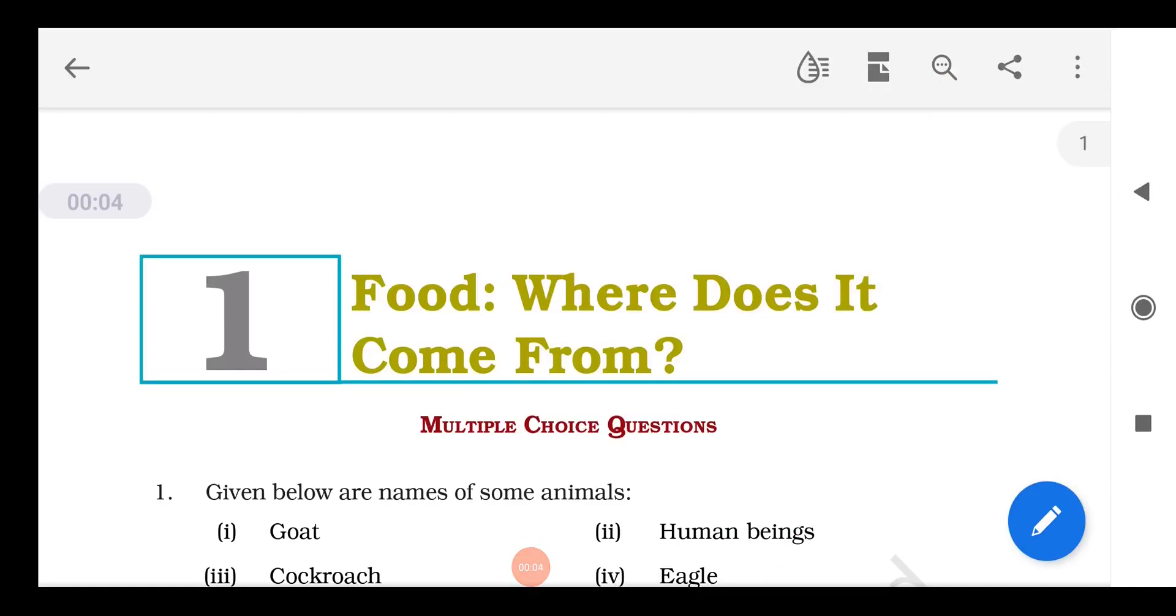Hi students, welcome all of you to NCERT Exemplar Problems series of Class 6 Science. This is the very first episode, number one, from the chapter Food: Where Does It Come From? Before I start my video, let me tell you dear students I have developed NCERT Exemplar Problems series videos for class 7th also.